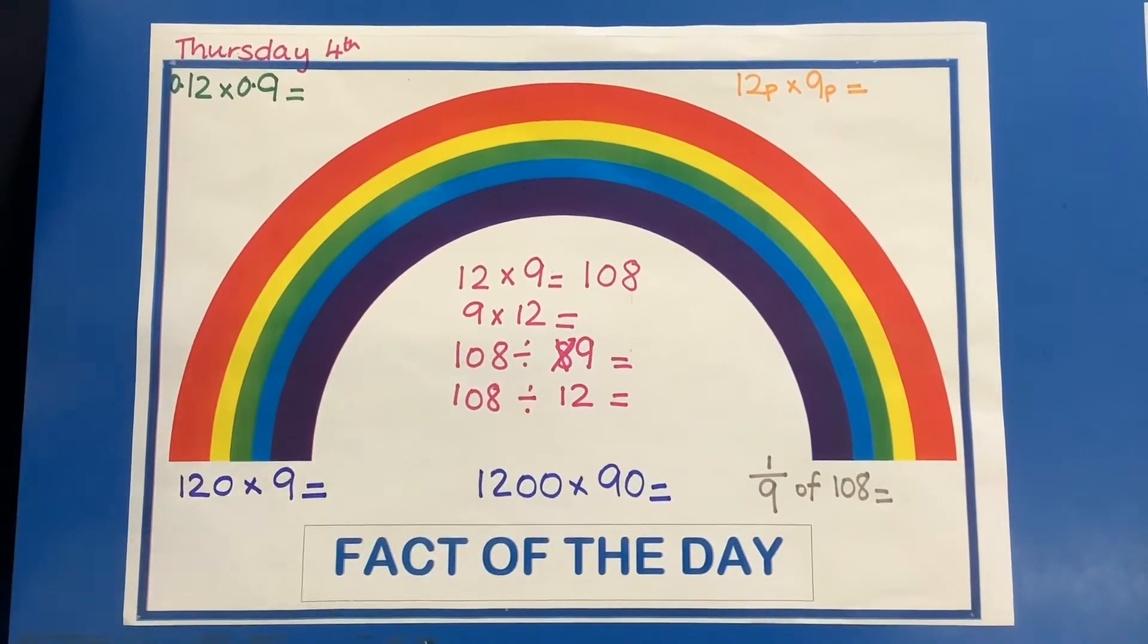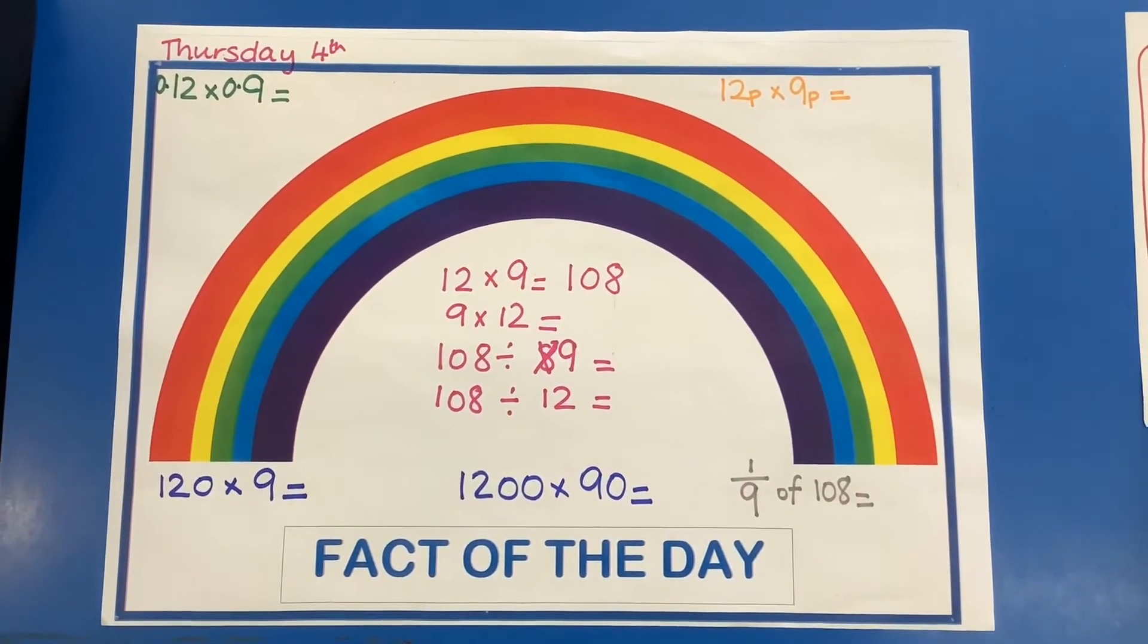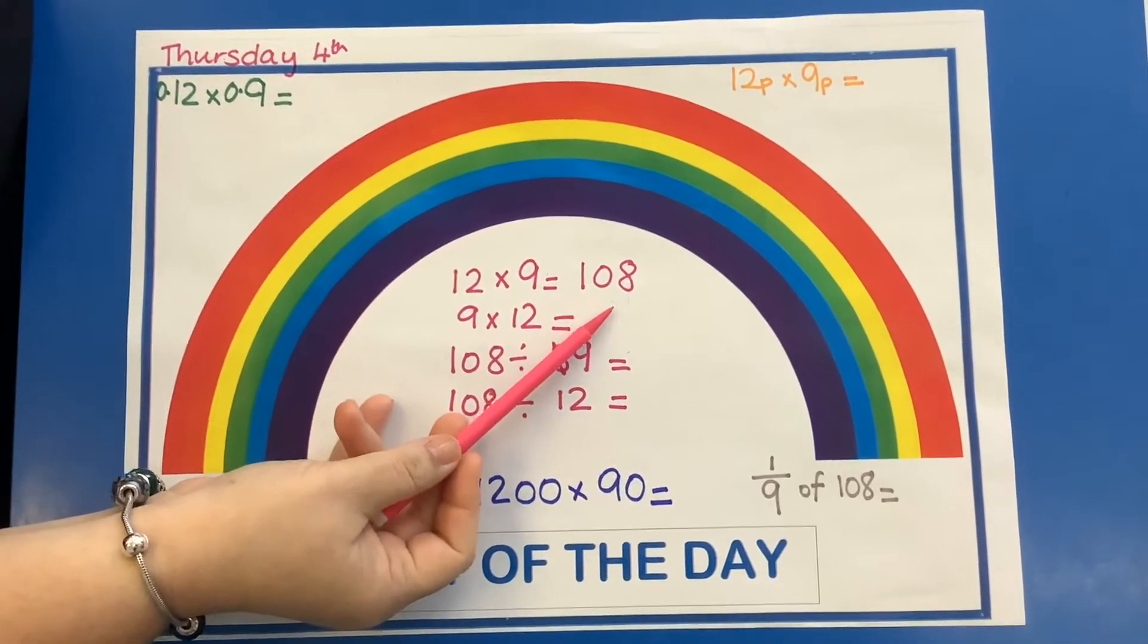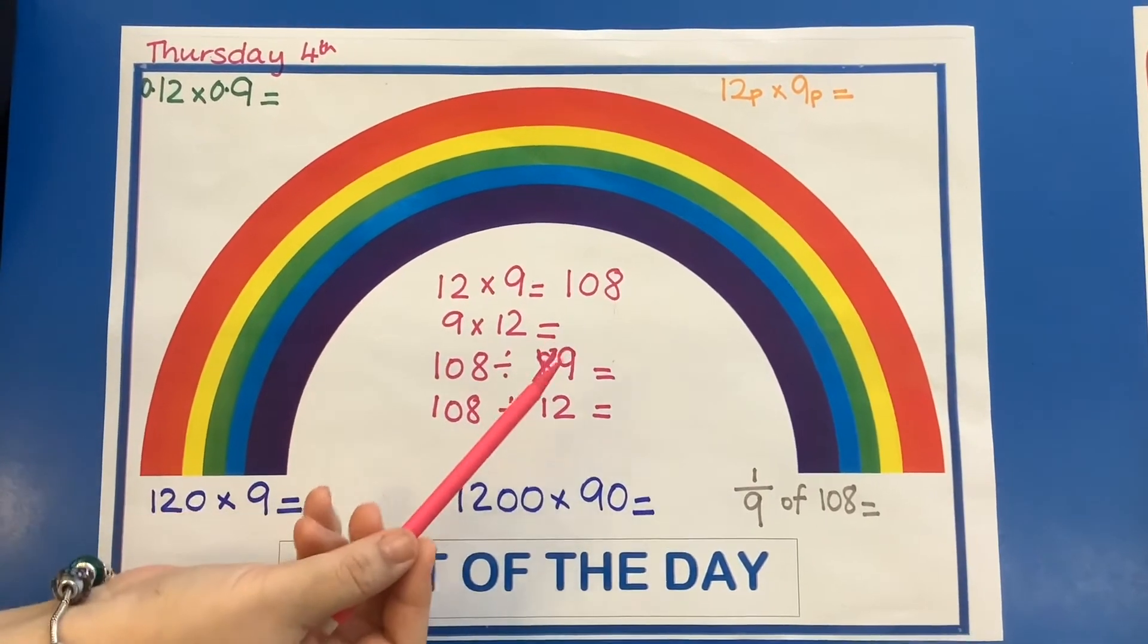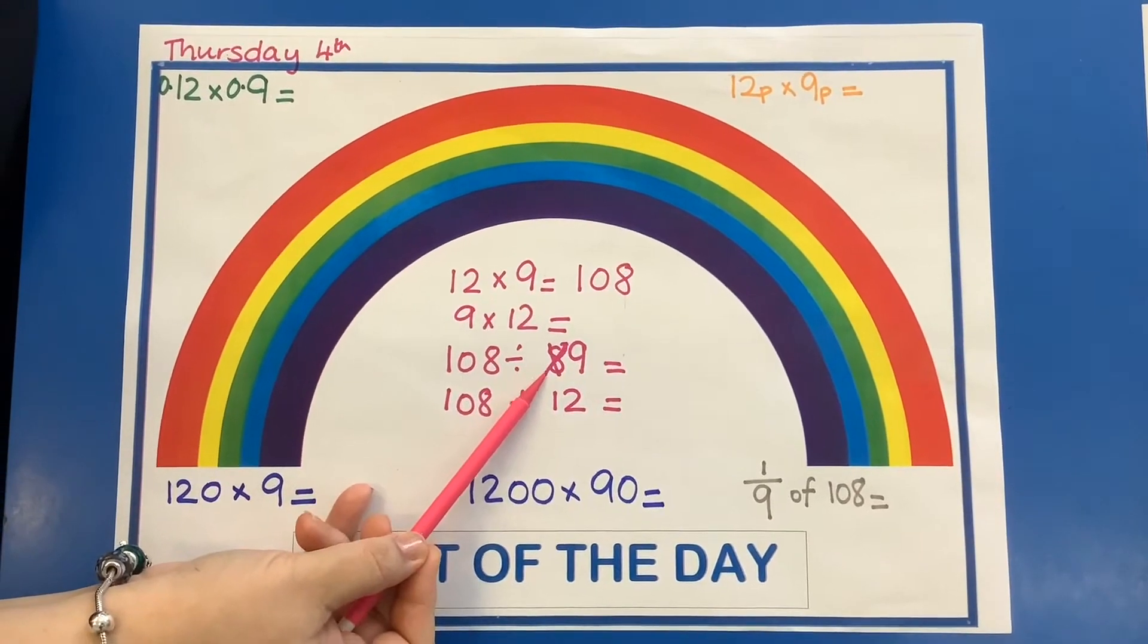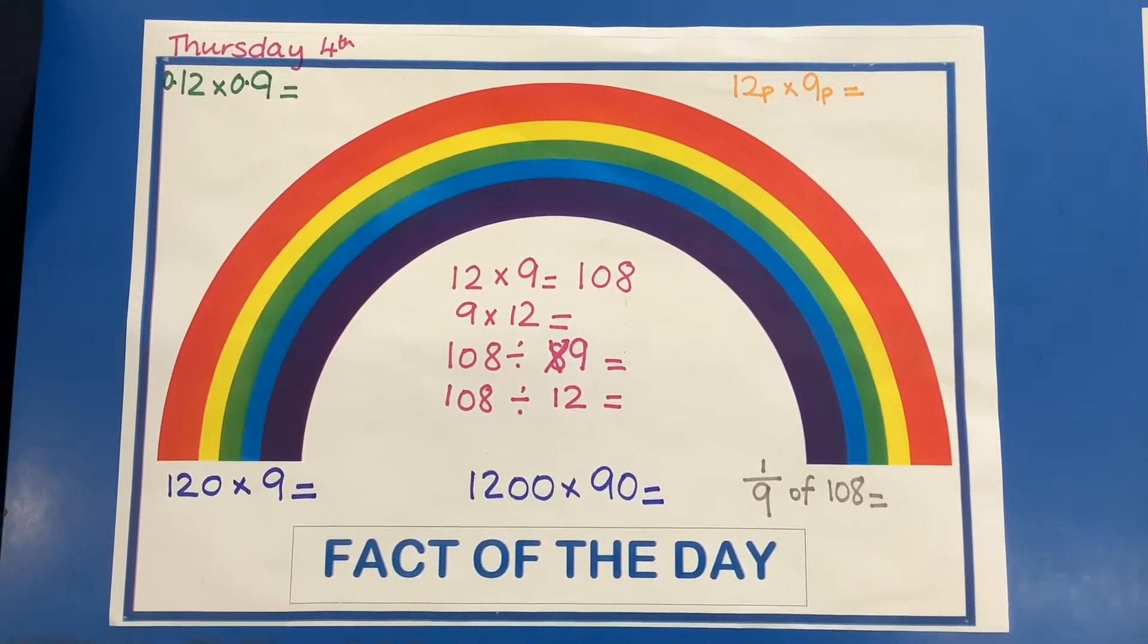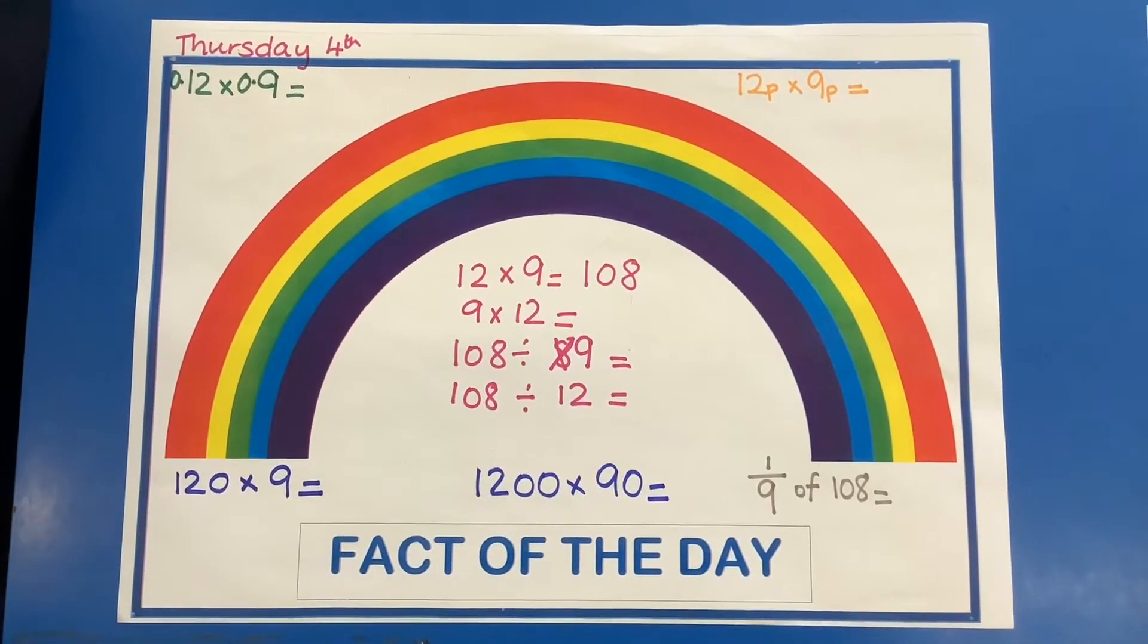So your last fact of the day when we're not in class is 12 times 9 equals 108. Oh, I've made a little bit of a mistake there, but that's okay, I've crossed it out, nothing to worry. What other facts do you know? 12 times 9 equals 108.